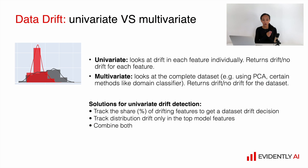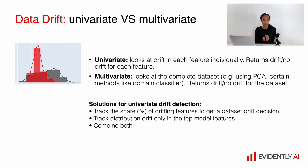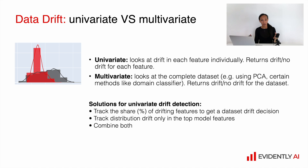Let's touch on univariate versus multivariate drift detection. The univariate approach compares individual variables — for example, important features or model output — looking at each feature independently, which makes results easy to interpret. If you have thousands of features and only two drifted, you know exactly which ones and can explore their distributions in detail. But if you have 10,000 or even 100 features, sometimes you just want a general decision about whether your dataset has changed significantly, and in that case you move to multivariate drift detection.